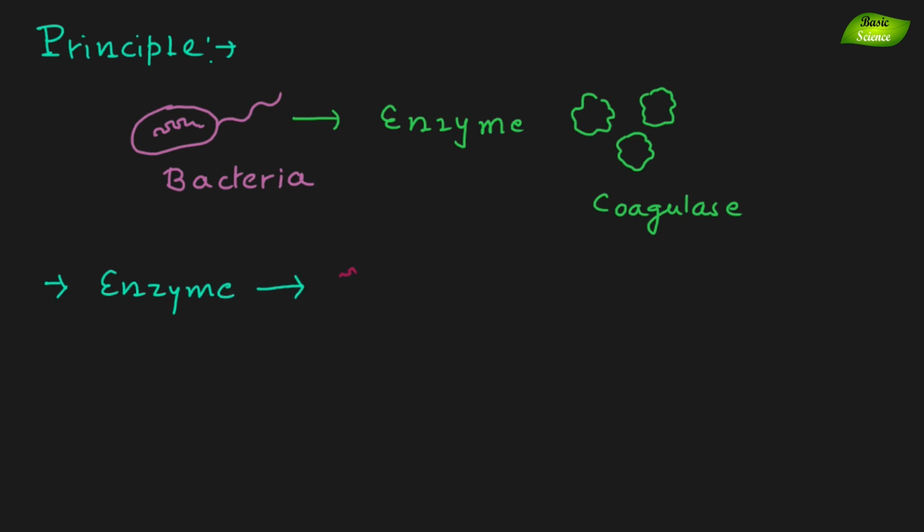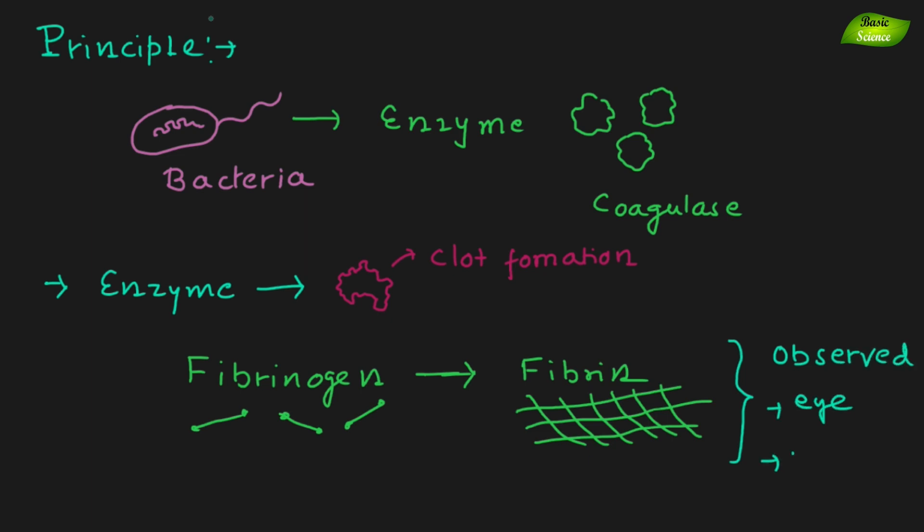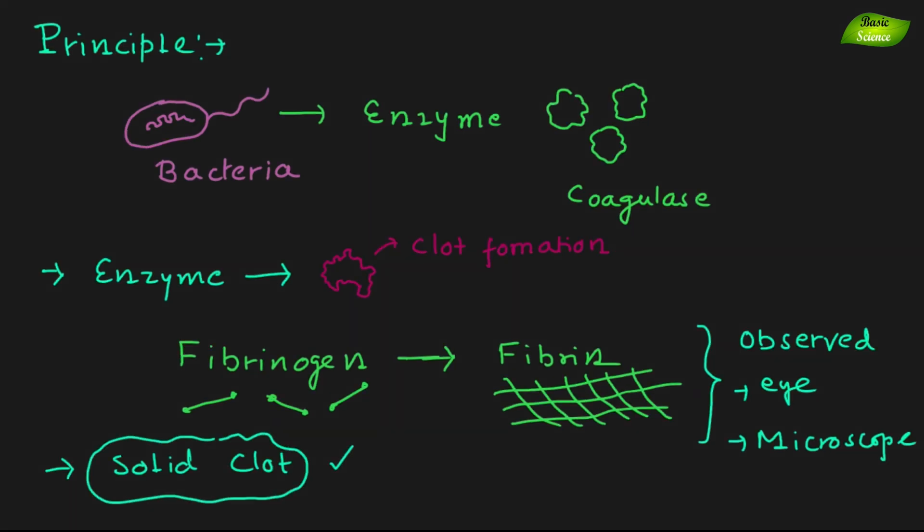So if you give plasma, it can clot the plasma and there will be physical clot formation. What happens is in our plasma we have fibrinogen which is inactive and once that is activated it can form the clot which is the complex or the three-dimensional complex of fibrin molecules which can be detected by eye even or you can use microscope to see the solid clot.